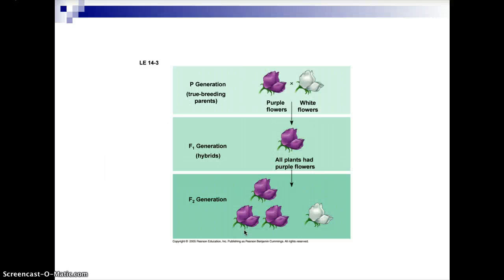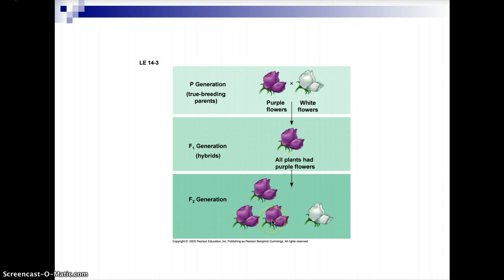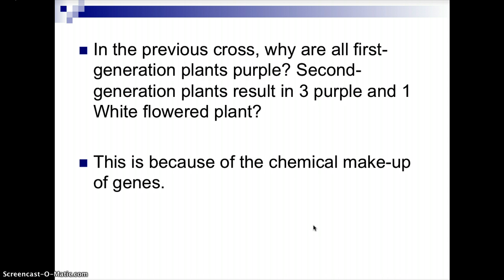Here you can see that experiment again: you have the P generation, the true breeding purple flower plant cross-pollinated with the true breeding white flower plant, and all the F1 generation plants are purple. They are hybrids though, between the purple and white flowers. Then if you self-pollinate two F1 plants, you have an F2 generation where you end up with three purple flower plants and one white flower plant. Why are all the first generation plants purple, and the second generation resulted in three purple and one white?